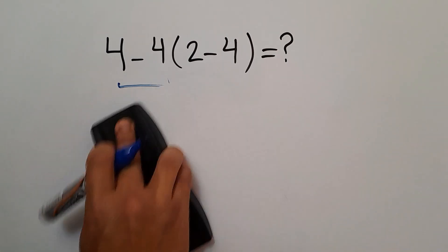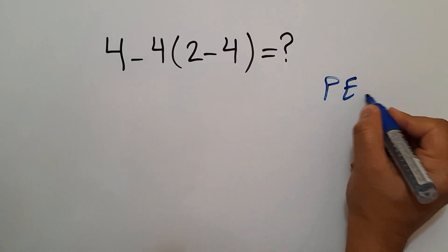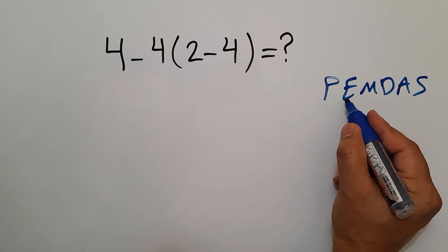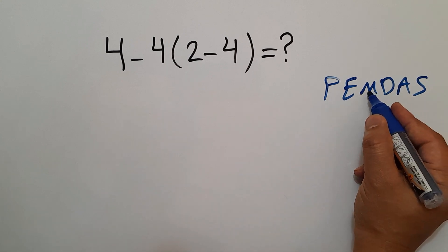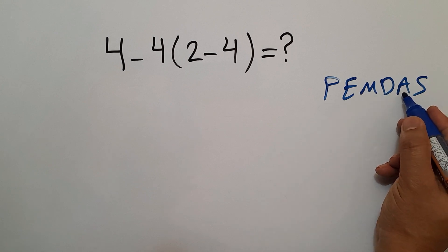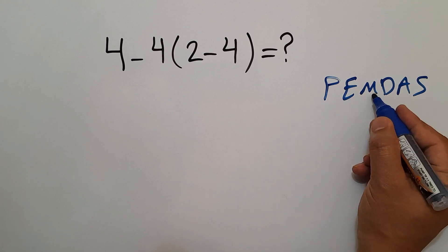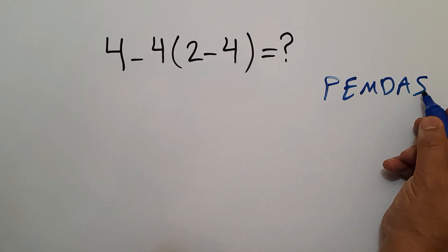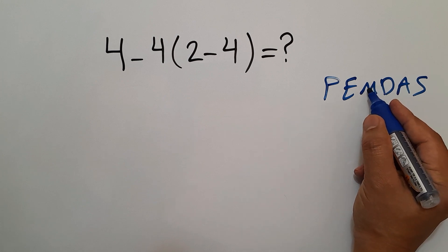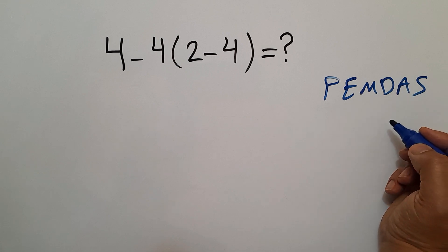Because according to the order of operations, which is PEMDAS: P stands for parentheses, E stands for exponents, M and D stands for multiplication and division, and A and S stands for addition and subtraction. We first do parentheses, then exponents, then multiplication and division, and finally addition and subtraction. Remember that multiplication and division have equal priority and we work from left to right. The same goes for addition and subtraction.